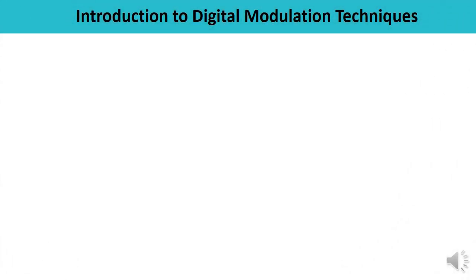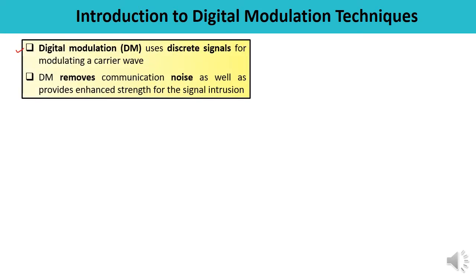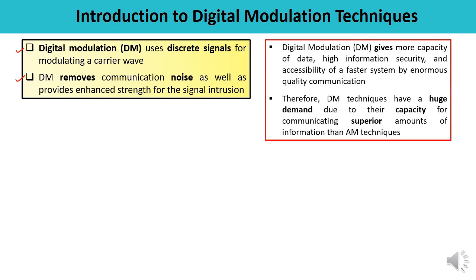What do you mean by digital modulation techniques? Digital modulation uses discrete signals for modulating a carrier wave. It removes communication noise and provides enhanced strength for the signal. Digital modulation is always preferred over analog modulation techniques. There are various advantages: it gives more data capacity, high information security, and accessibility at a faster rate. Because of these numerous advantages, digital modulation is in huge demand, used by many users and in many applications, and communicates superior quality of information compared to analog modulation.